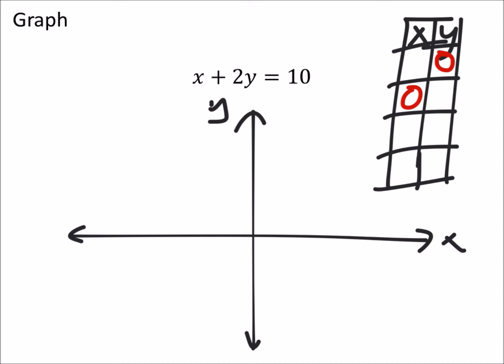If X is 0, then we end up with 2Y equals 10. So we'll divide both sides by 2 and then Y is 5. So that's when X is 0. When Y is 0, then we've got X plus 0 equals 10. So that just tells us that X is 10 when Y is 0.